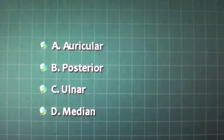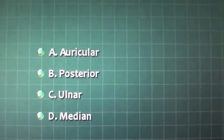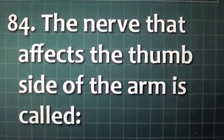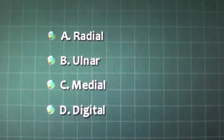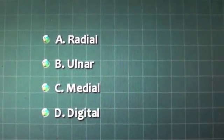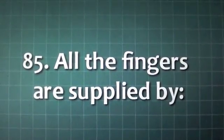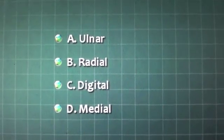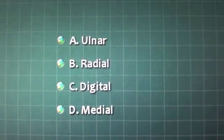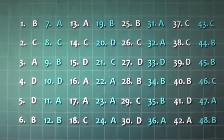The nerve that affects the little finger side of the arm is called: A. Auricular, B. Posterior, C. Ulnar, D. Median. The nerve that affects the thumb side of the arm is called: A. Radial, B. Ulnar, C. Medial, D. Digital. All the fingers are supplied by: A. Ulnar, B. Radial, C. Digital, D. Medial nerves.